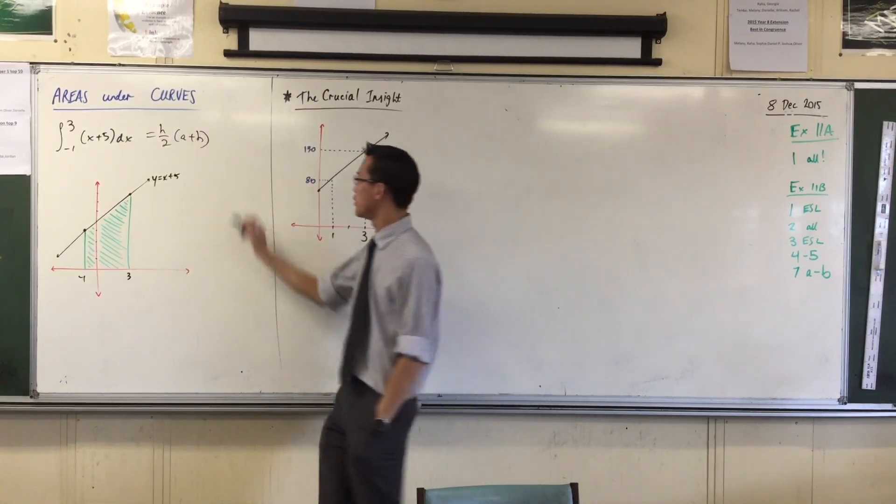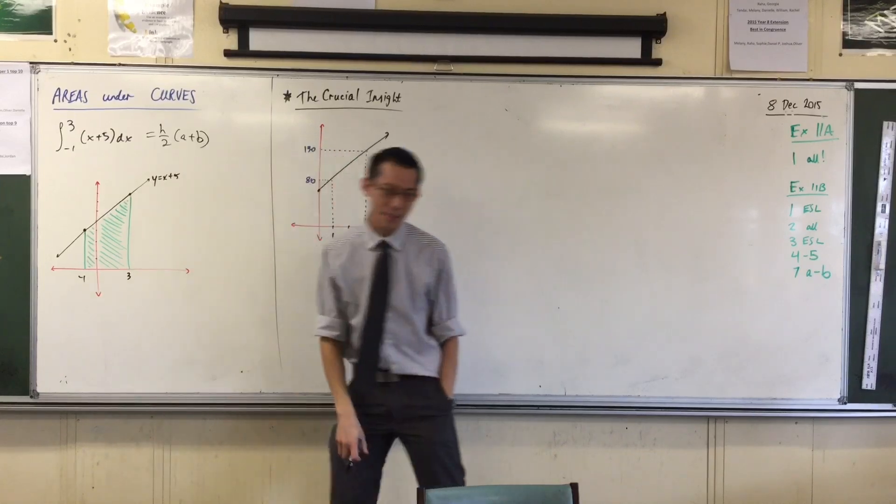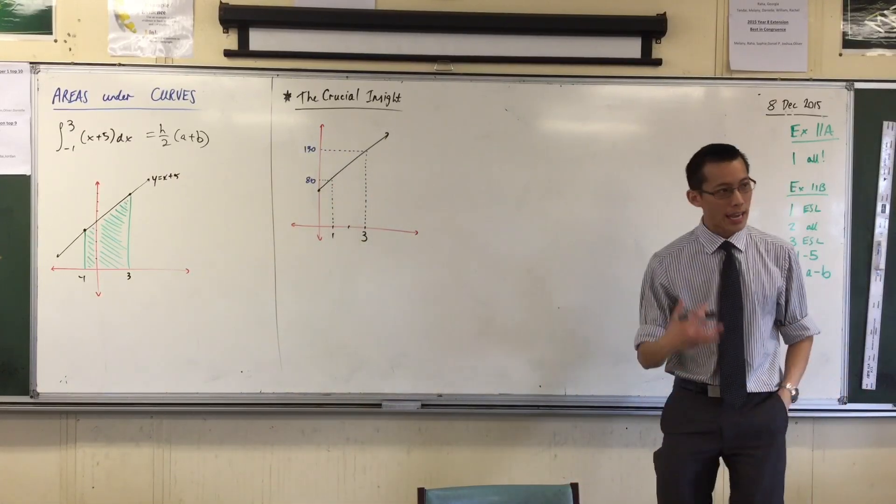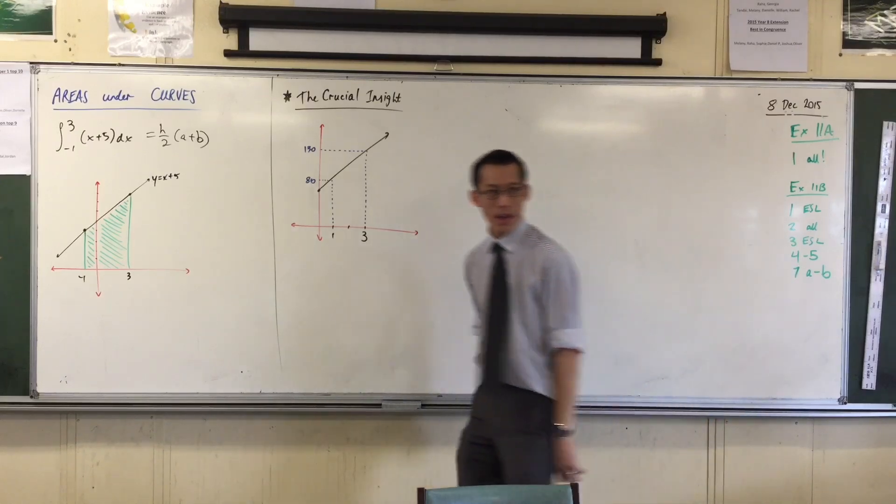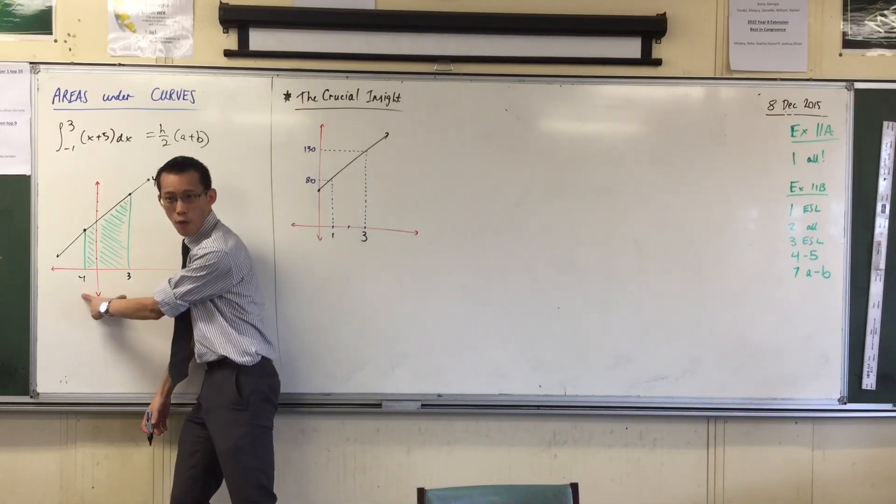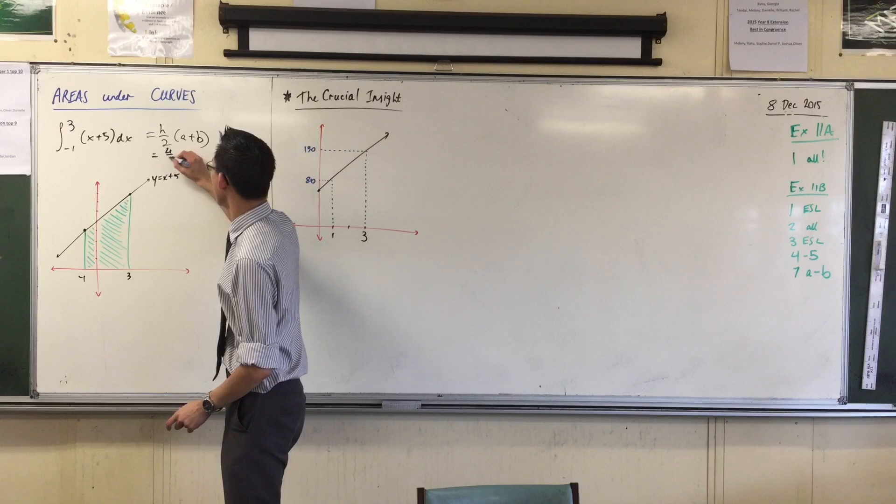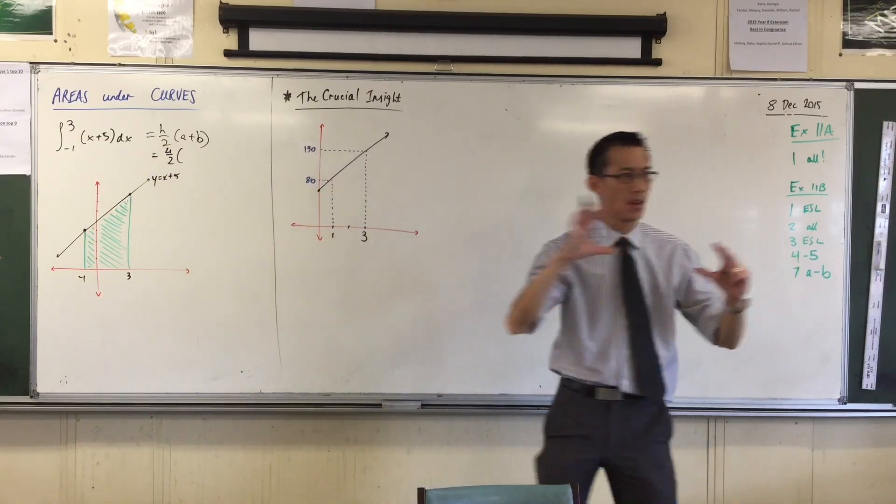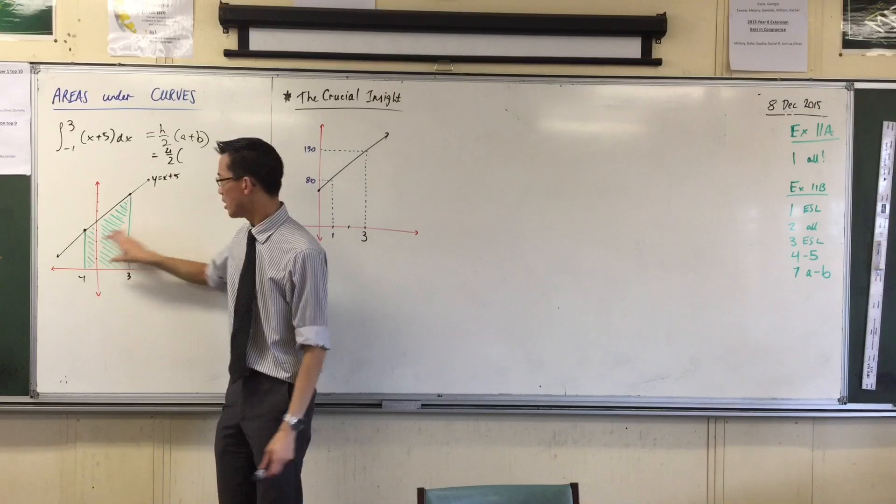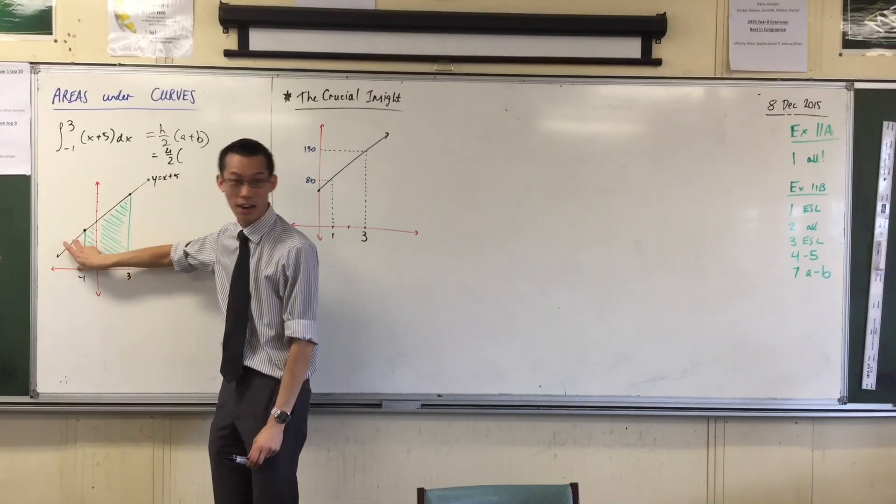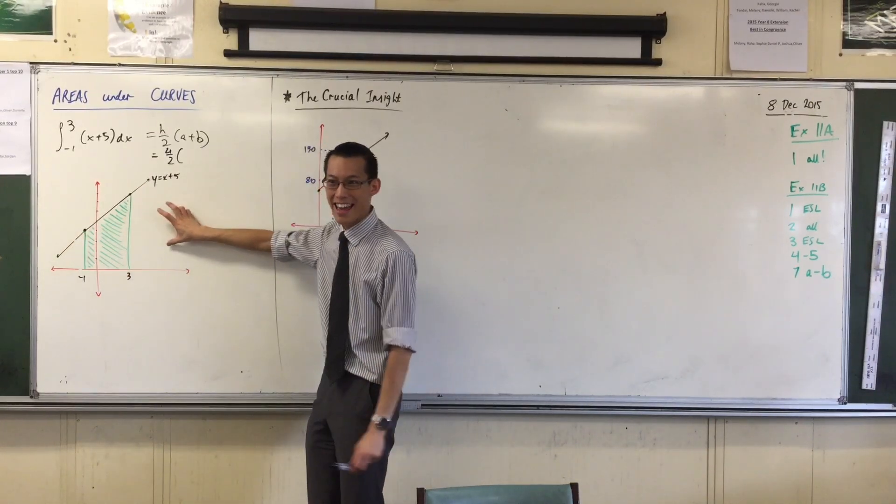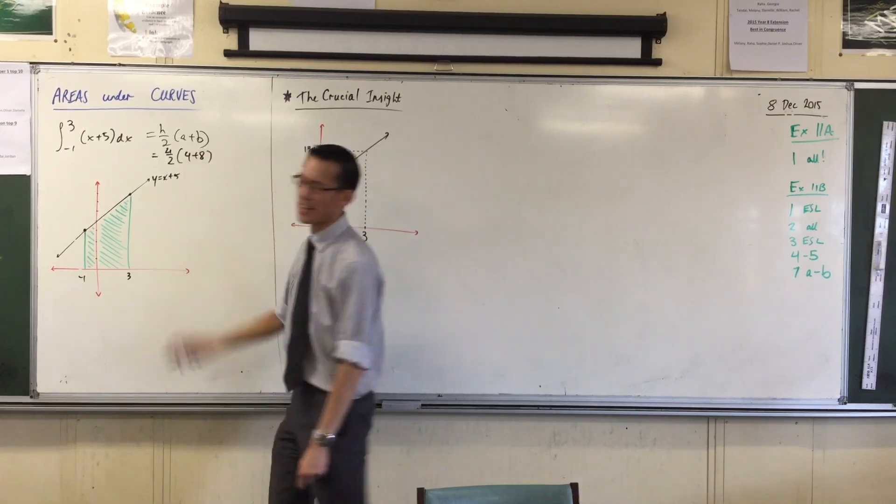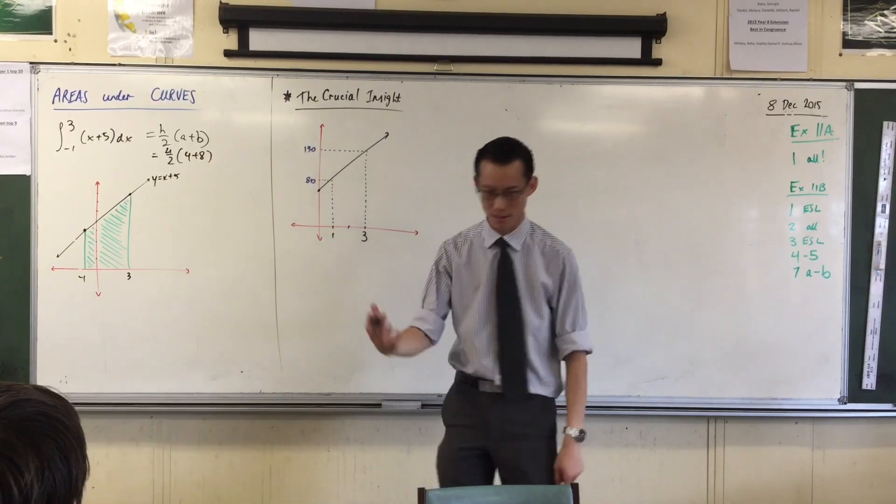Okay, now just be careful because you know how every formula uses h for different things and a and b for different things. So here, what is the height of my trapezium? Yeah, it's this distance of 4, isn't it, right? So we're going to go 4 over 2. What are a and b? They are the parallel sides, which are... I'm going to do them one at a time. 4 and 8, right? So that's 2 times 12, which is 24.